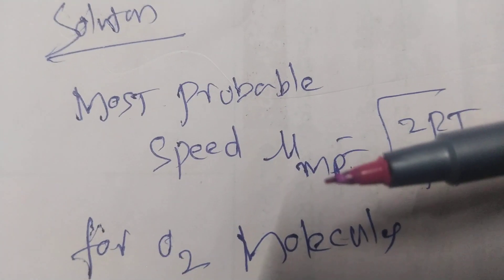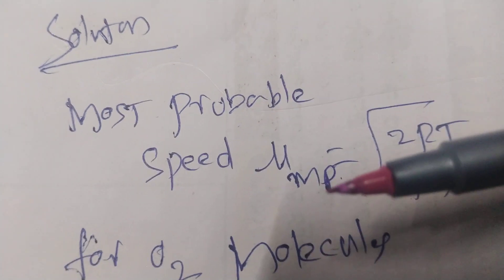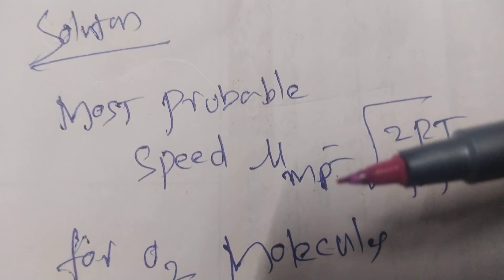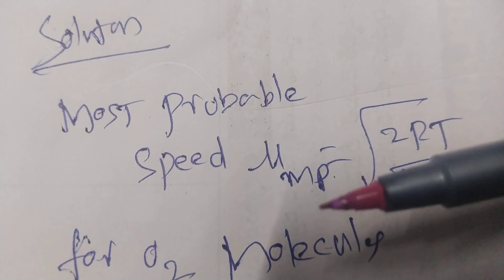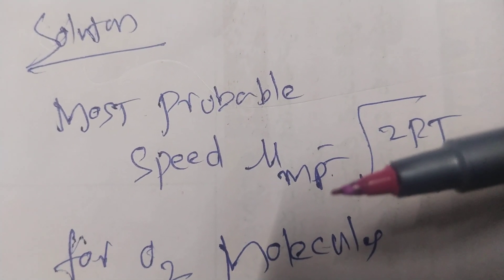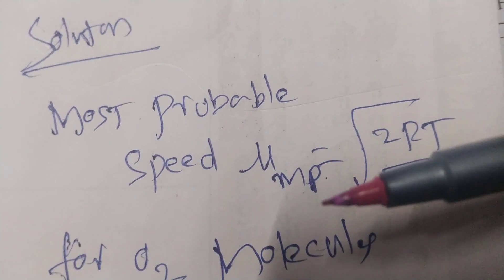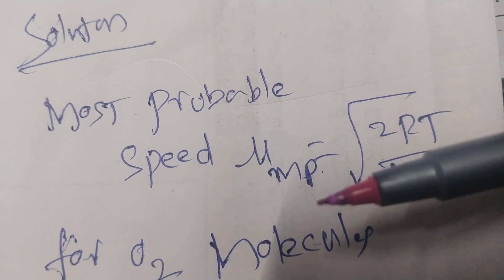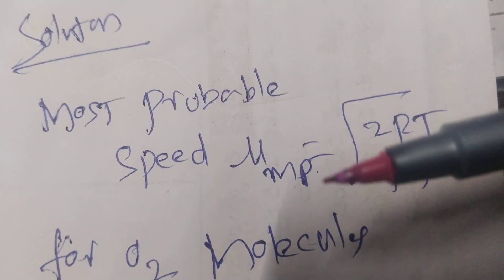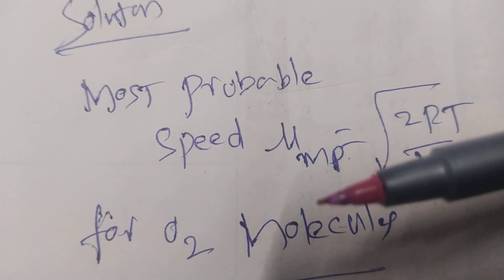You are expected to know the relation between most probable velocity, average velocity, and RMS velocity is 1 to 1.128 to 1.224.